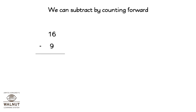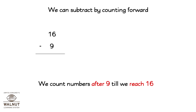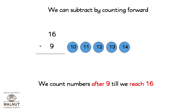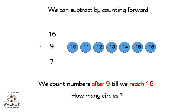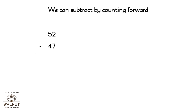Let's now subtract 16 minus 9. We count numbers after 9 until we reach 16: 10, 11, 12, 13, 14, 15, and 16. How many circles is that? 7. So 16 minus 9 is equal to 7.